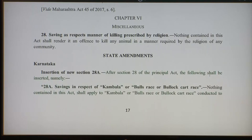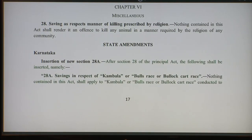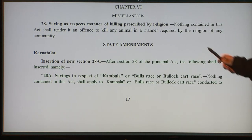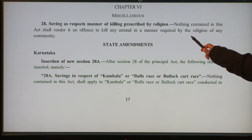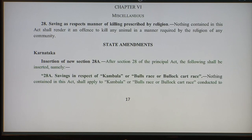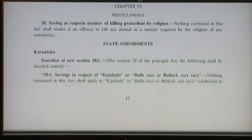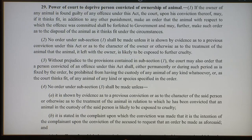Chapter 6 covers miscellaneous sections. Nothing in this act shall render it an offense to kill an animal in a manner required by the religion of any community — it must be a manner required by the religion. The court may also deprive a person convicted of cruelty of the ownership of the animal.